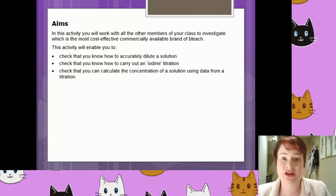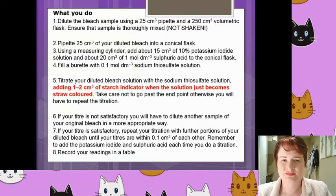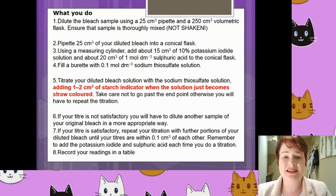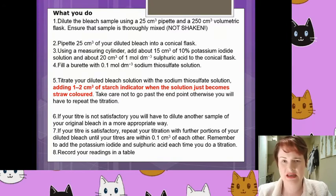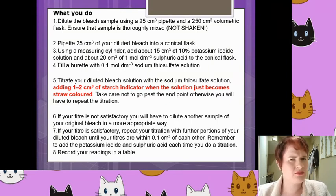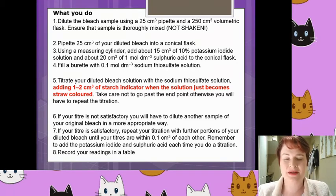This is the method that we would be following if we were doing this in lesson. Step one is how we prepare the dilutions. It does say there: ensure the sample is thoroughly mixed, not shaken. Are there any ideas why it might not want to be shaken? Well, bearing in mind this is coming from bleach, a lot of bleaches have what we call foaming agents, so things to make it go bubbly. So the last two years when we've done this experiment in school, when people have shaken the mixture, you get lots of bubbles. And then with the bubbles, you can't tell where the meniscus lies. So if you're making it up to a volumetric flask, you can't do it accurately because you can't tell where your meniscus is.